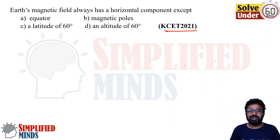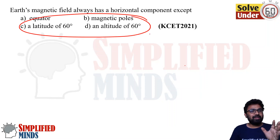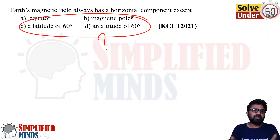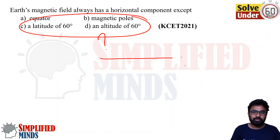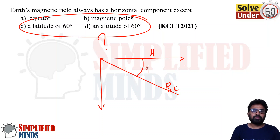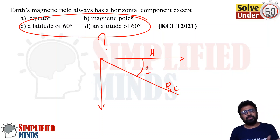It is a very simple question. Look at what is being asked. Basically, in these four options, the Earth's magnetic field always has a horizontal component, except — meaning at which of these locations does the Earth's magnetic field NOT have a horizontal component? The angle between the horizontal component and the Earth's magnetic field is called dip, also written as 'I'.